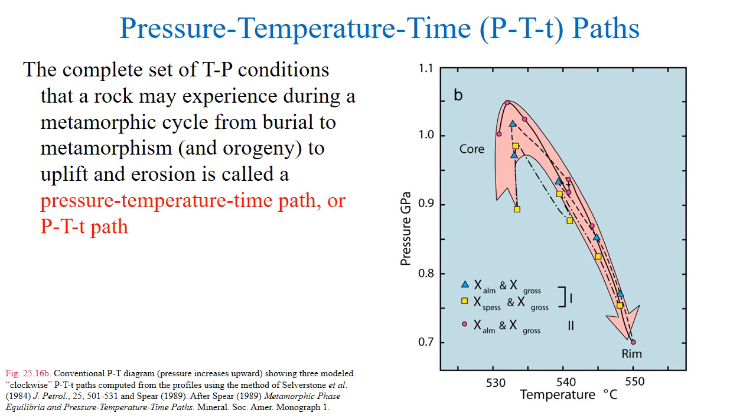P-T-t paths were first introduced back in chapter 16 when we attempted to assess the conditions experienced by progressively subducted crust and convecting mantle wedge as they moved through the subduction zone complex.